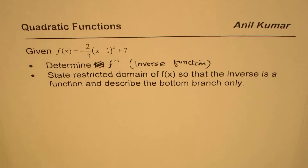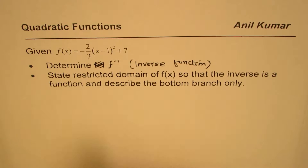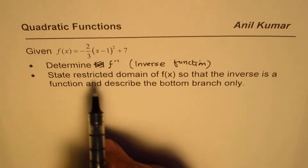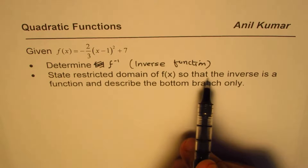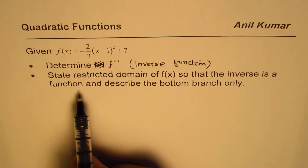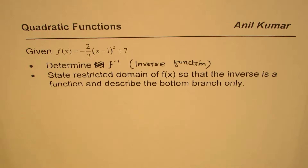I'm Adil Kumar sharing with you some good questions from previous test papers on quadratic functions. The question is: given f(x) = -2/3(x-1)² + 7, determine the inverse of the function, state the restricted domain of f(x) so that the inverse is a function, and describe the bottom branch only. You can pause the video, answer the question, and then look into my suggestions.